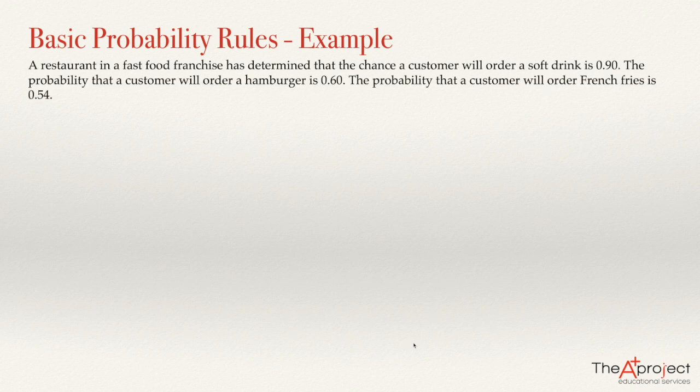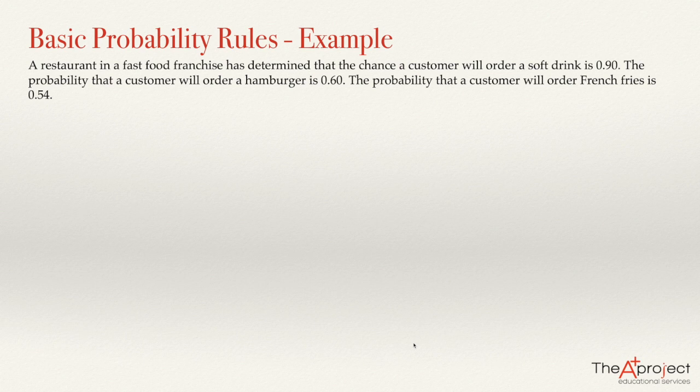A restaurant in a fast food franchise has determined that the chance of a customer will order a soft drink is 0.19. The probability that the customer will order a hamburger is 0.60. And the probability that the customer will order french fries is 0.54. With this information, I would like to solve some questions.